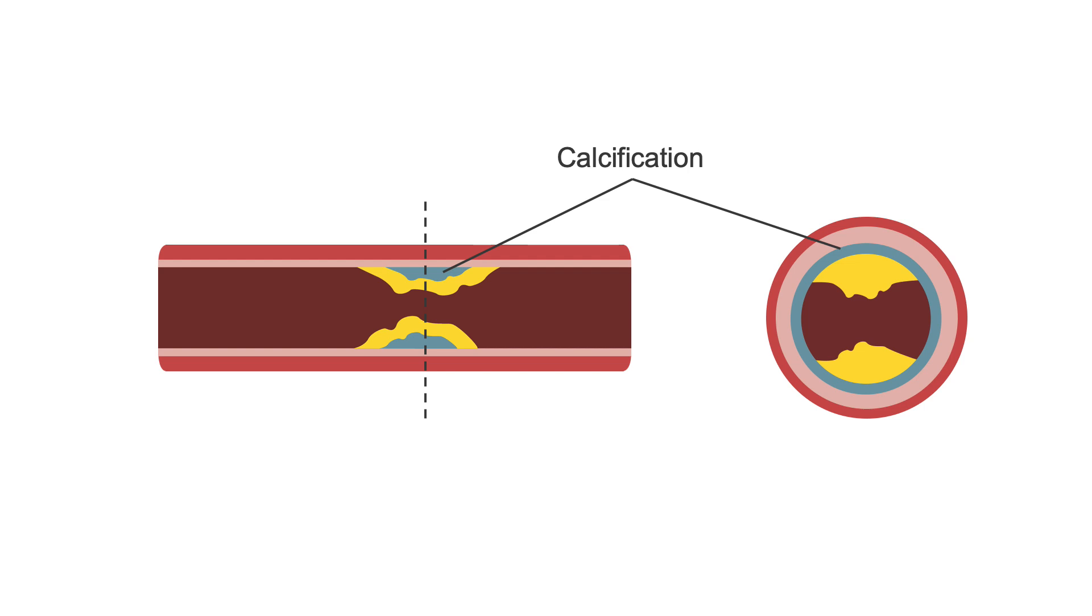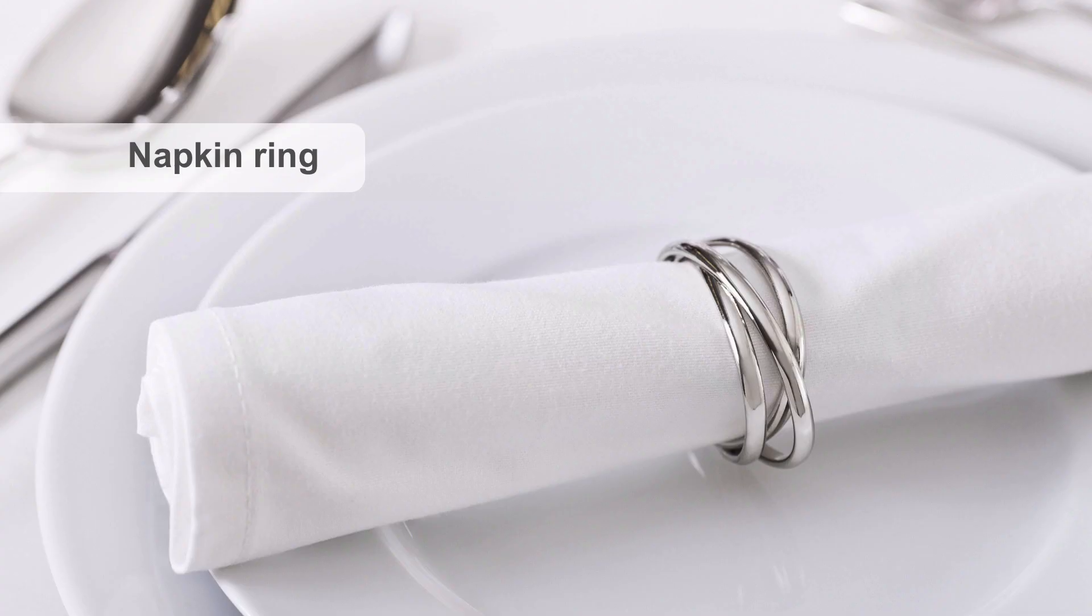Some calcification within the wall of the artery goes completely around the artery, known as circumferential calcification. Given its appearance, this is sometimes referred to as napkin ring calcification.